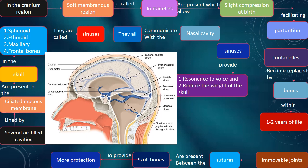Several air-filled cavities lined by mucoid membrane are present in the sphenoid, ethmoid, maxillary, and frontal bones. They are called sinuses. They communicate with the nasal cavity. Sinuses provide resonance to voice and reduce the weight of the skull.